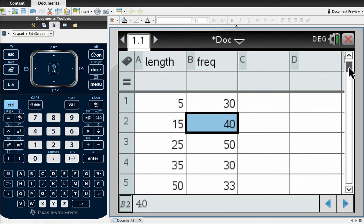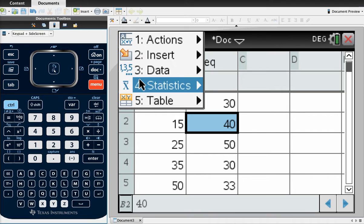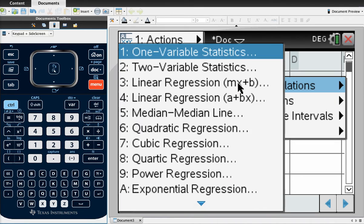So I've typed all those in already onto the spreadsheet and you can see I've given headings of length and frequency to each of those columns. I'm now going to go on to Menu, Statistics, Stat Calculations, and this is one variable statistics because only one thing is being measured here, the length.